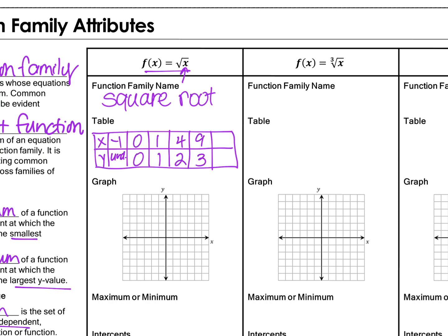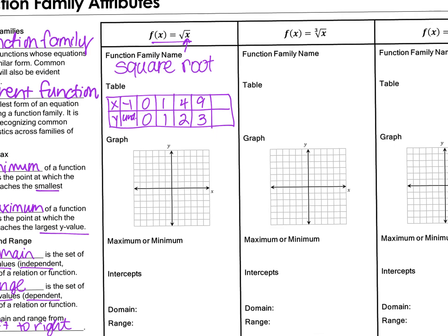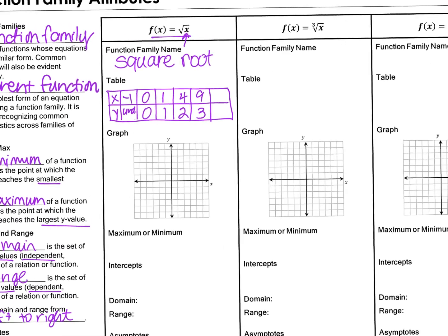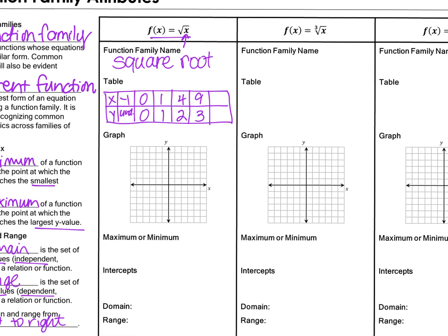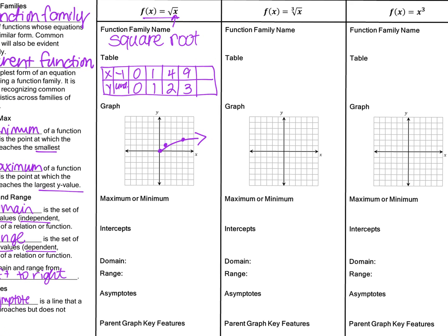Those are the points I'm going to use to graph this square root parent function. Negative 1 we can't graph. We can graph (0,0), (1,1), (4,2) — and on this graph we can't even graph (9,3). Remember, a square root graph is a ray: it has an endpoint and an arrow. For max or min — notice we do have a minimum point, and that minimum point is at (0,0).